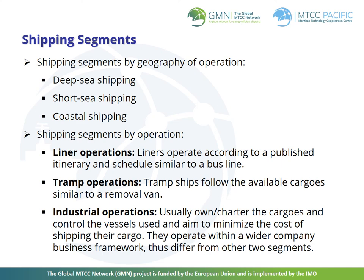Tramp operations: tramp ships follow the available cargoes, similar to a removal van. Industrial operations: the owner or charterer manages the cargoes and controls the vessels used, aiming to minimize the cost of shipping their cargo. They operate within a wider company business framework and thus differ from the other two segments.